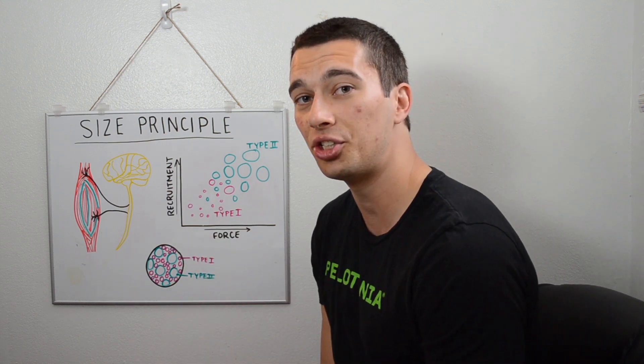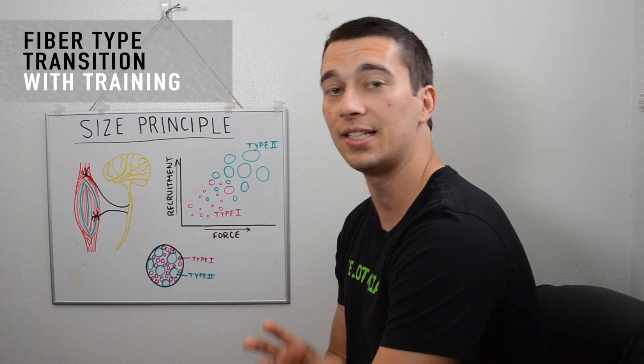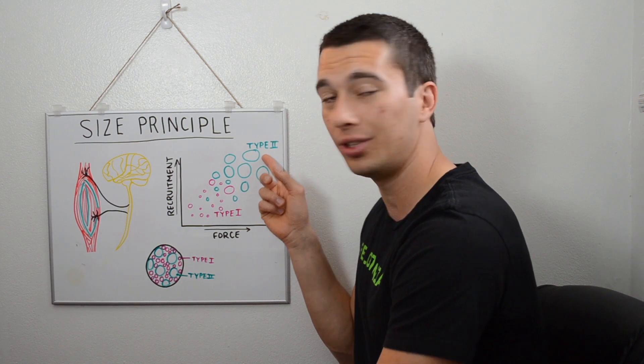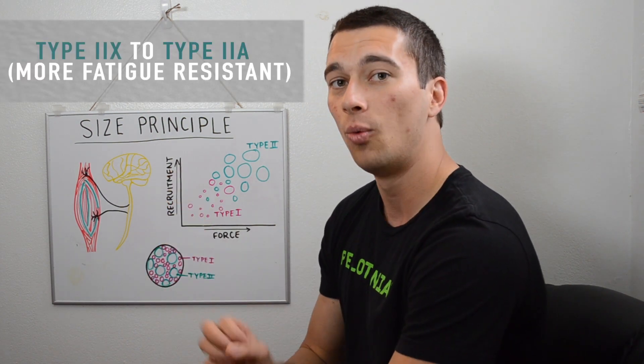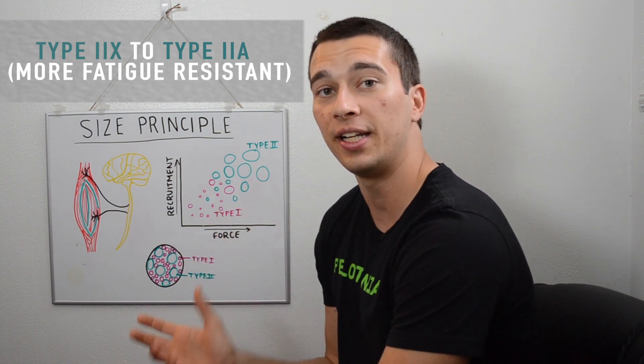A little bonus information: we actually have a transition of fiber types with training, and it's not all that intuitive. A lot of times these very high threshold motor units, the type 2x's, will start to transition to type 2a's with training. The reason for that is that type 2a's are more fatigue resistant.